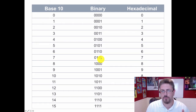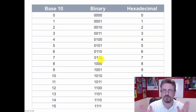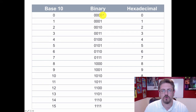A rest is a non-clap and a beat is a clap. You have a pattern emerge straight down in the first column: 0, 1, 0, 1, 0, 1, 0, 1. So that's rest, clap, rest, clap, rest, clap, rest, clap — all the way down.